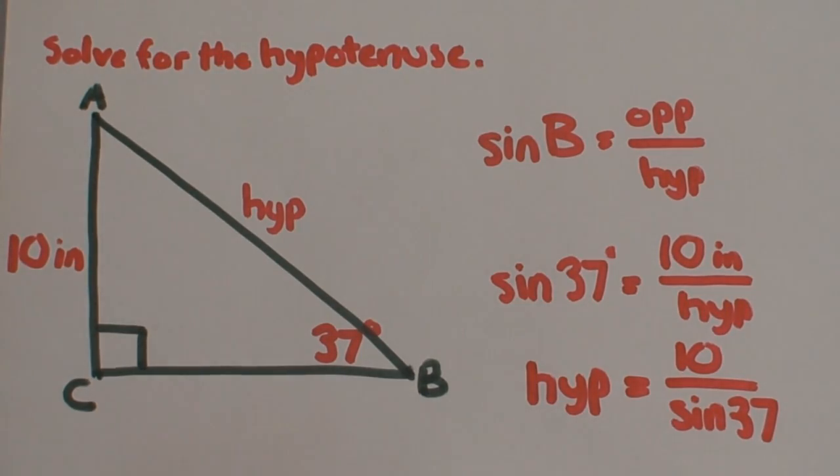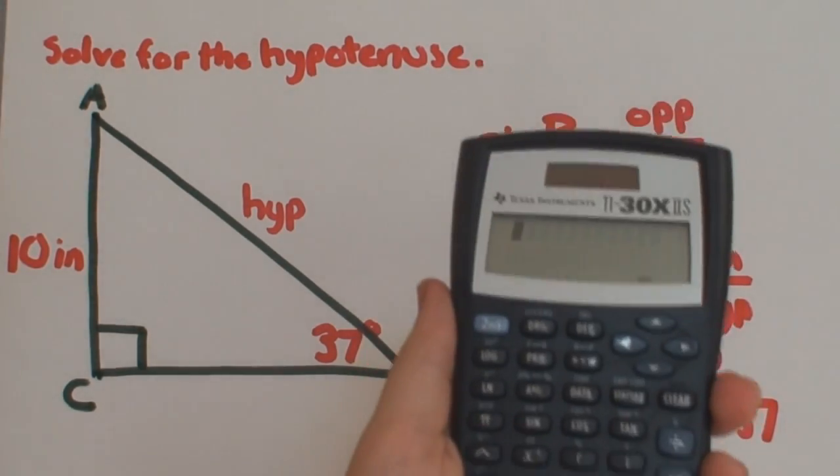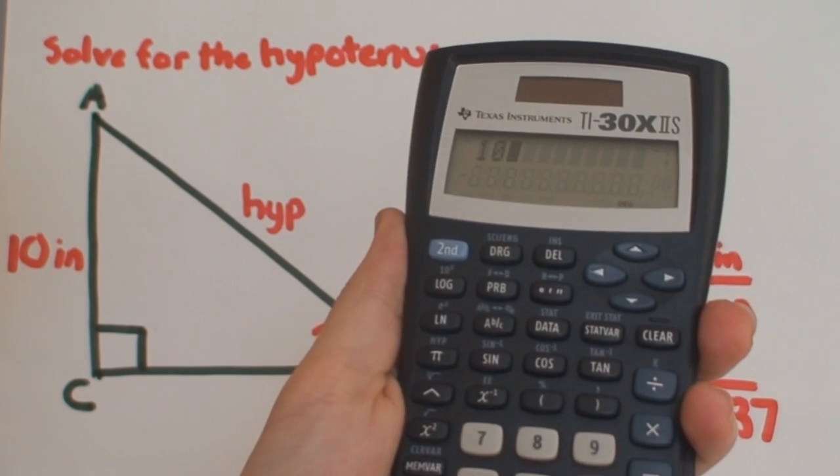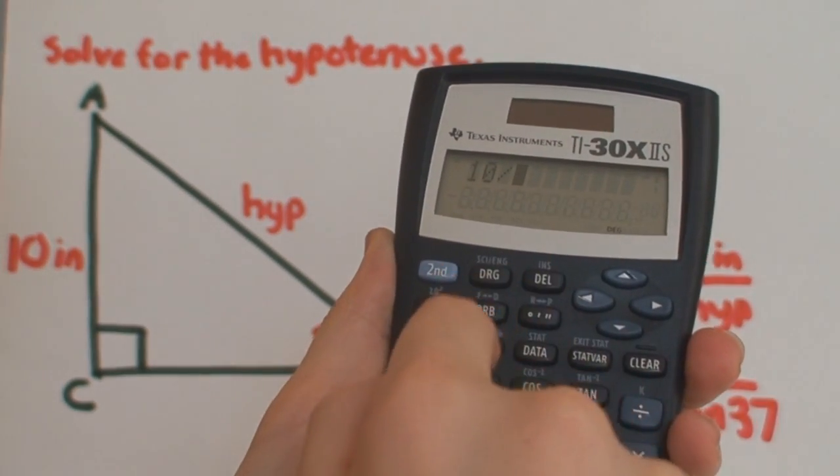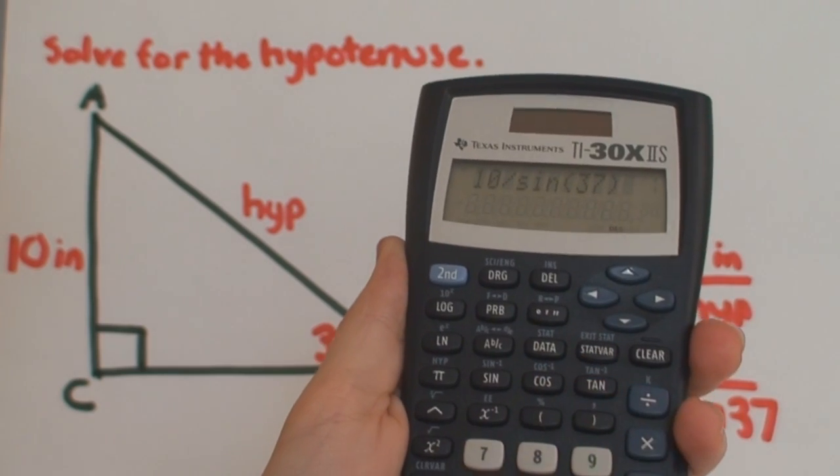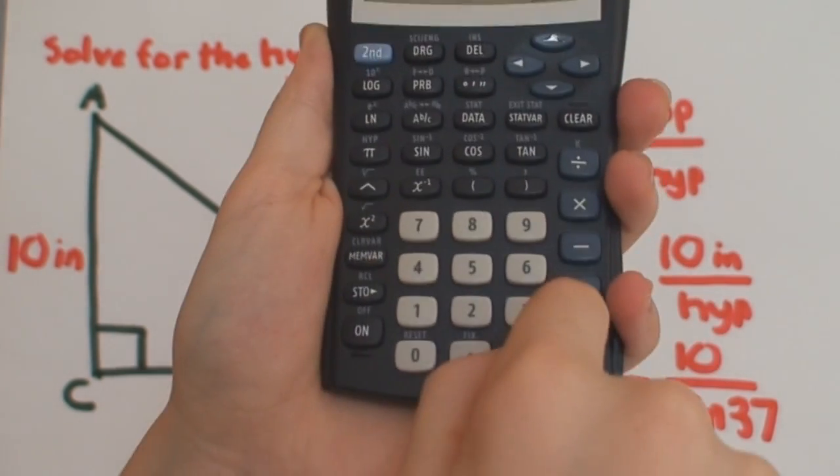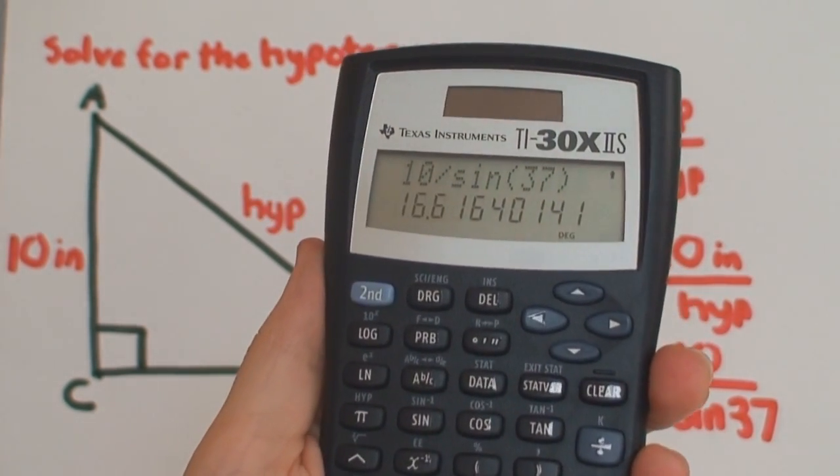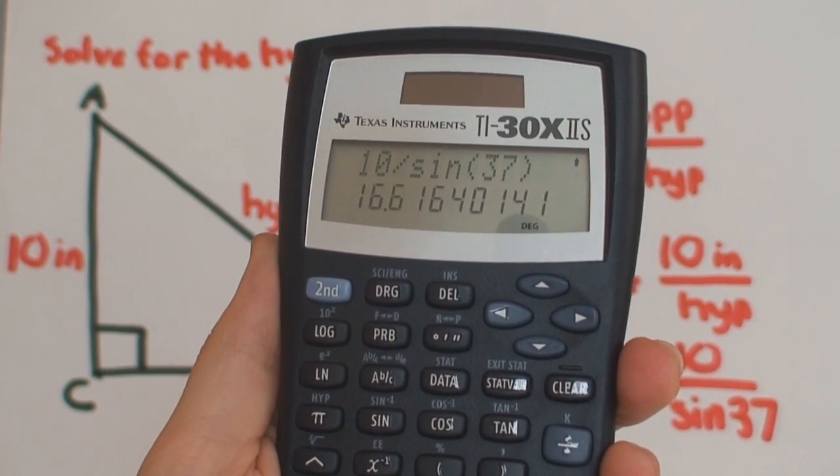The rest is even more simple. Simply take your calculator and enter 10 divided by sine 37. The answer is 16.6.